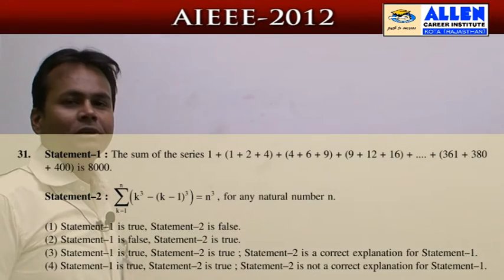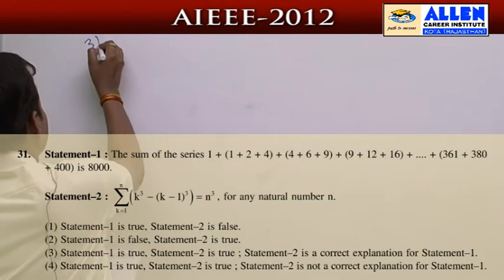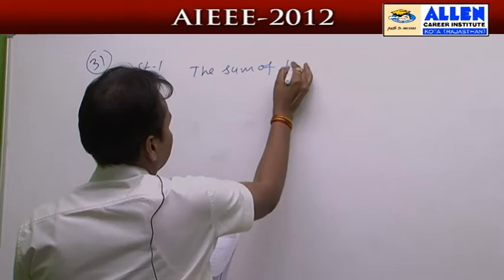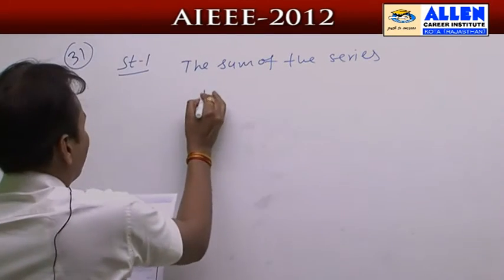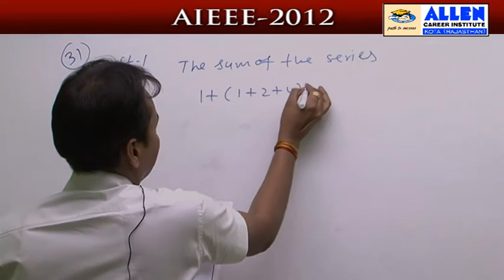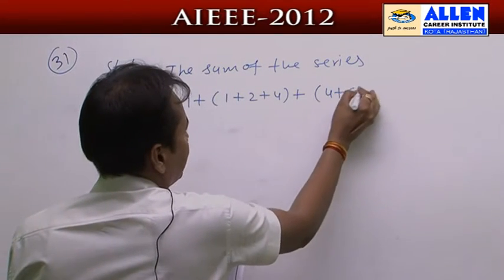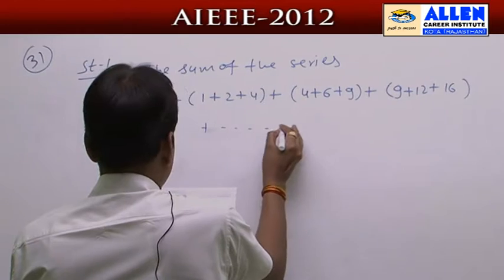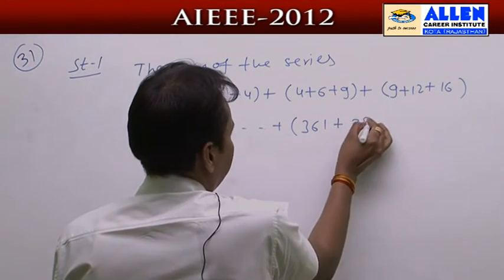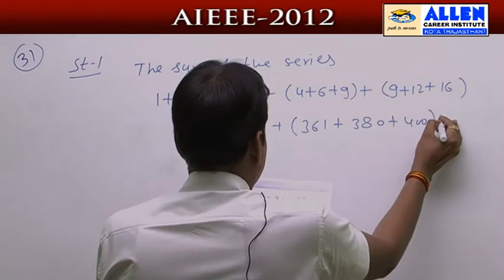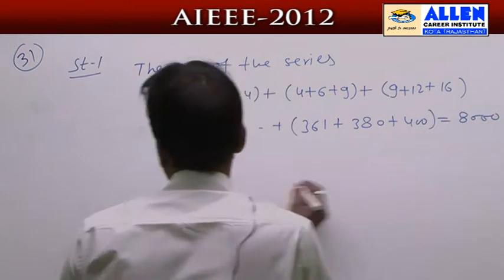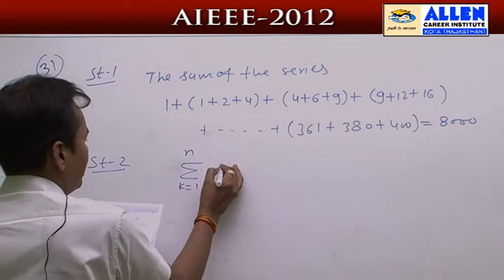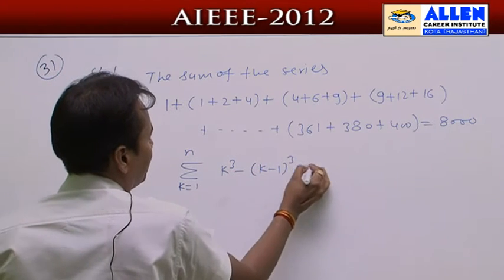This is an Assertion-Reason question based on progression. Statement 1 is: the sum of the series 1 + 1 + 2 + 4 + 4 + 6 + 9 + 9 + 12 + ... + 16 up to 361 + 380 + 400 equals 8000. Statement 2 is: the summation from k=1 to 2n of (k³ − (k−1)³) equals n³.